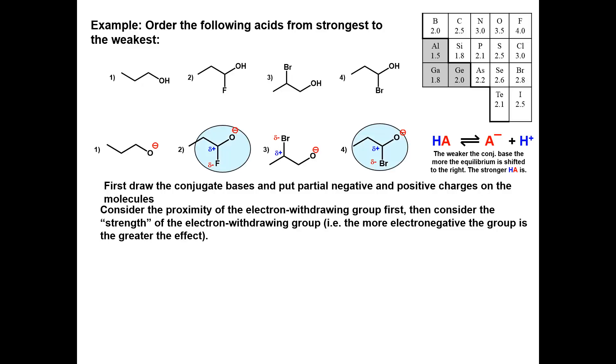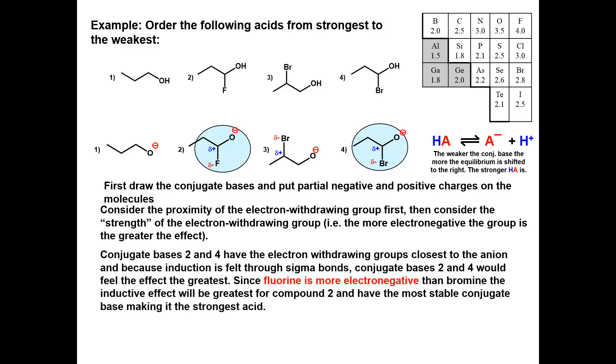Bases 2 and 4 have electron withdrawing groups closest to the anion, and because induction is felt through the sigma bonds, conjugate bases 2 and 4 would feel the greatest effect.